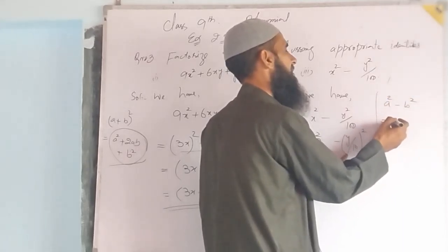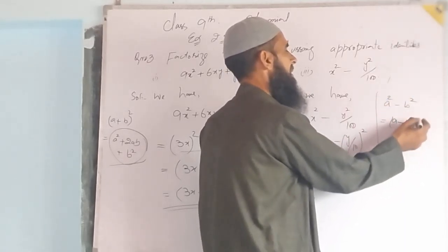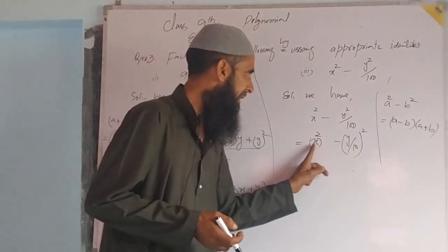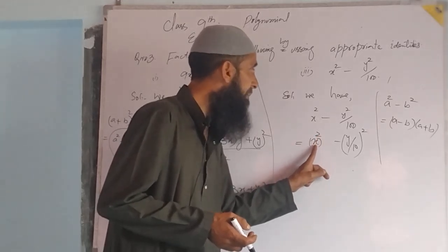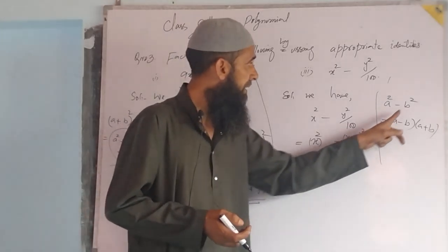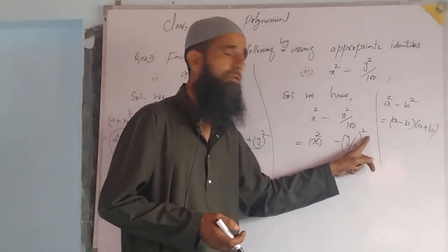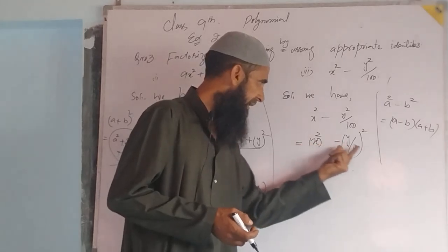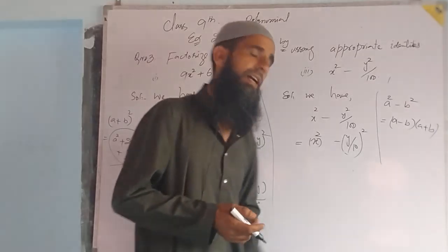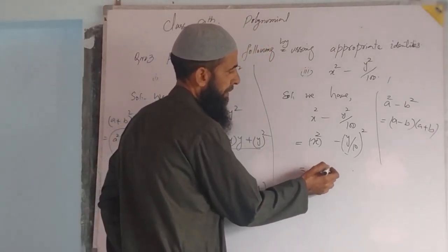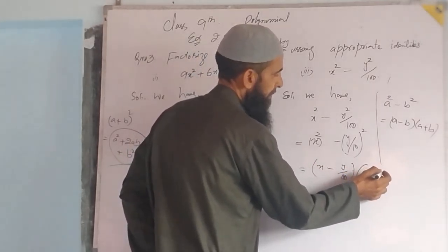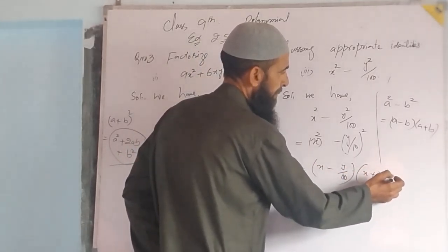Now we have the well-known algebraic identity: a squared minus b squared equals (a minus b) into (a plus b). Using this identity, we have a equals x and b equals y by 10, since b squared equals y by 10 whole square. Clearly this is of the form a squared minus b squared, so it equals (x minus y/10) into (x plus y/10).